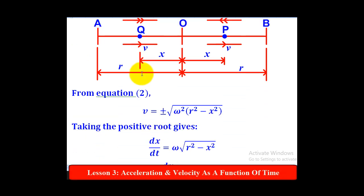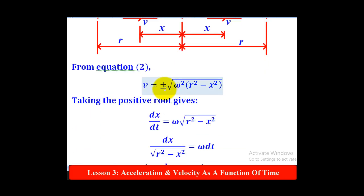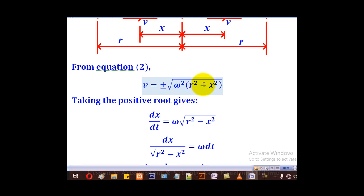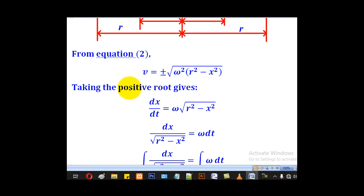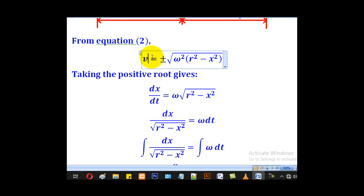From this expression, when you take the square root from both sides you will come up with plus or minus the square root of omega squared, open brackets r squared minus x squared. Taking the positive root we get this. We know that velocity is the same as dx/dt, which is the rate of change of displacement, so where there is v we put dx/dt.